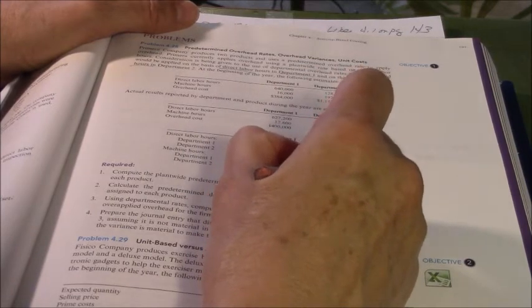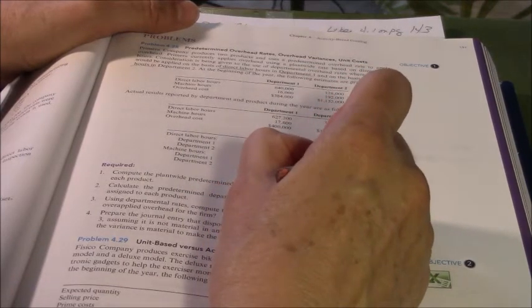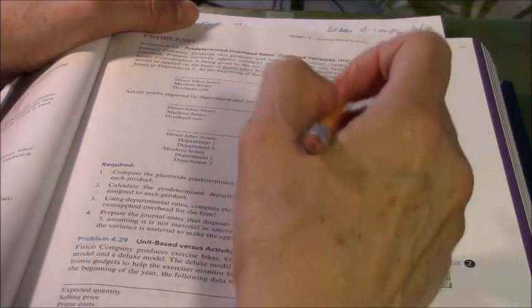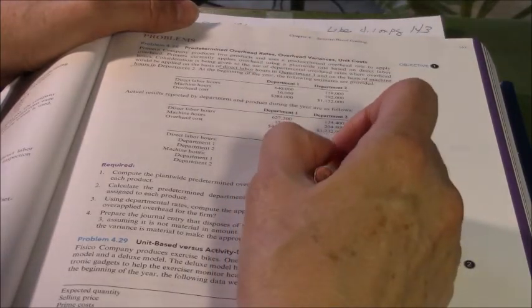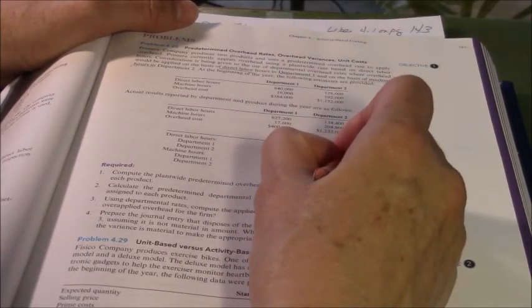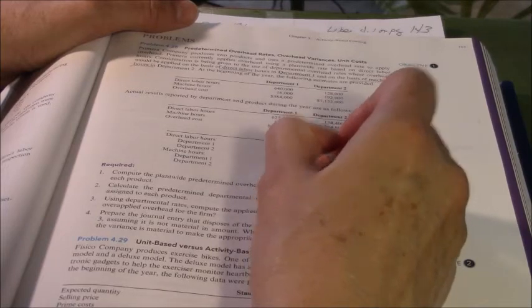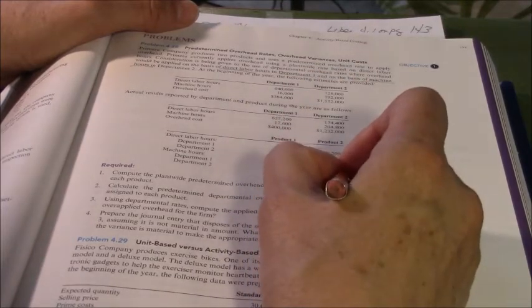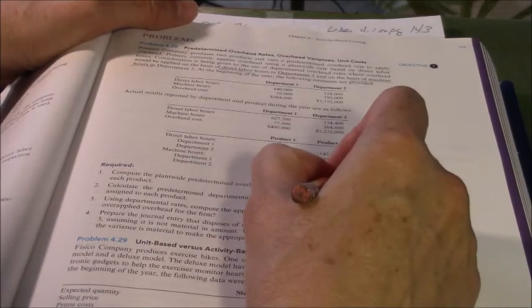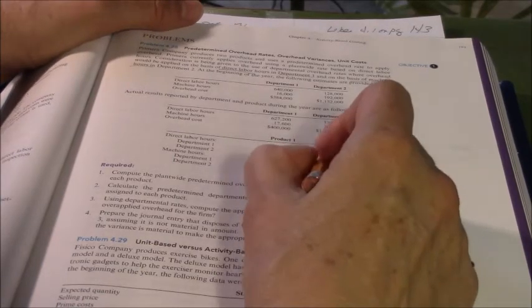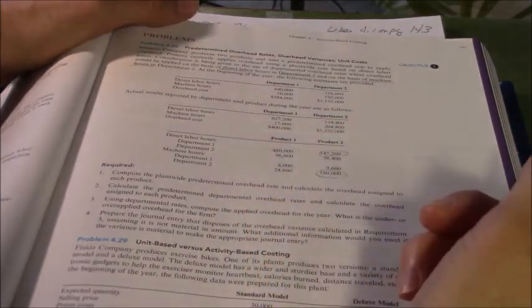I mean, sorry, product two takes 38,400 labor hours. I'm sorry, takes 147,200 from department one. And it takes machine hours from department two, 180. So we're going to use this and this for product two.